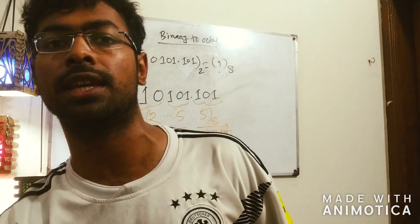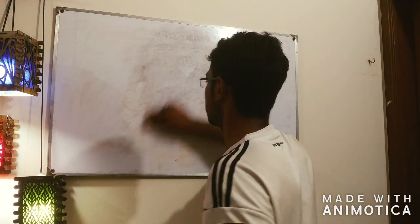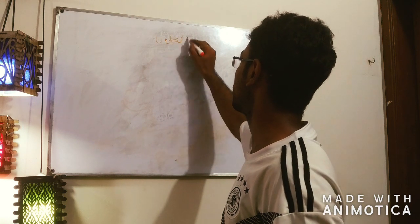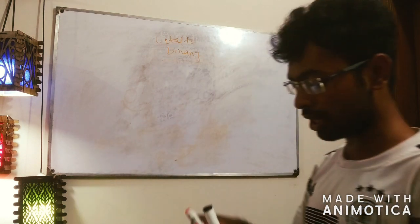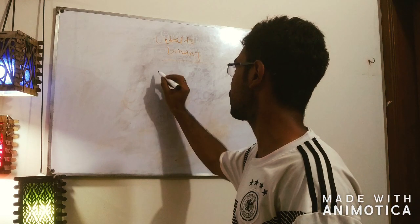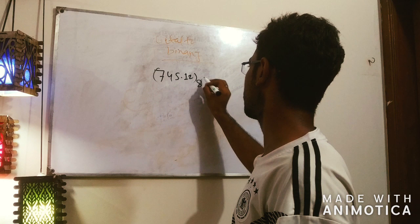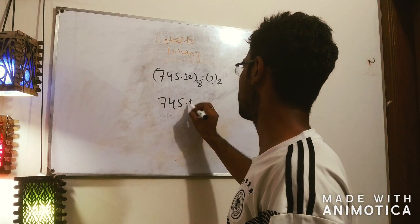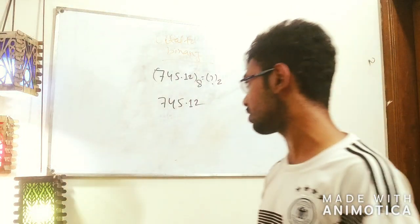A binary is octal. Octal is binary. So we can go to binary, octal to binary. And the second one, the third one is 775.12.